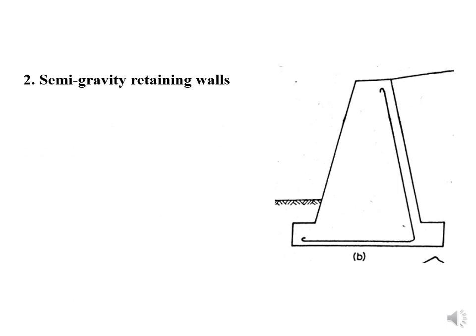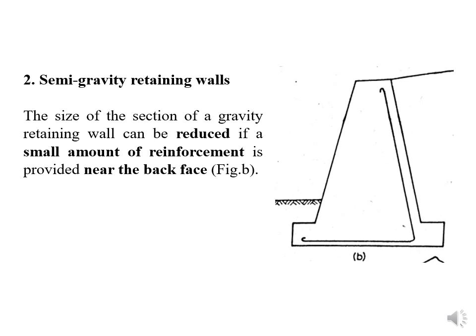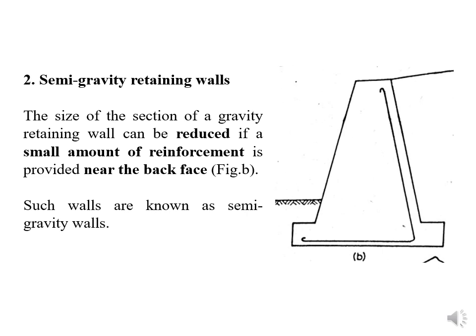The next type is called a semi-gravity retaining wall. In this case, the size of the section of a gravity retaining wall can be reduced if a small amount of reinforcement is provided near the back face. You can see in this retaining wall that reinforcement is provided on the back face. By providing reinforcement, we do not need more concrete — the thickness can be reduced. Such walls are called semi-gravity walls.